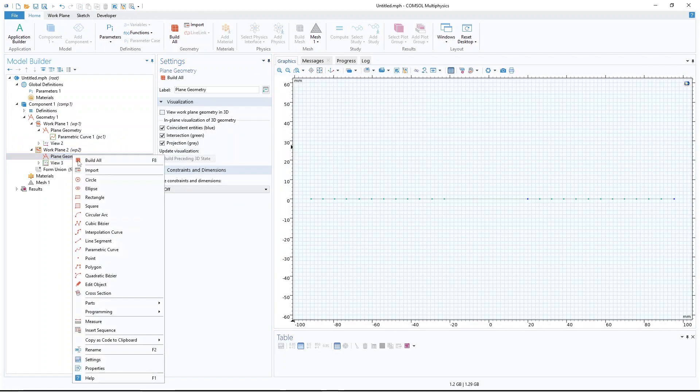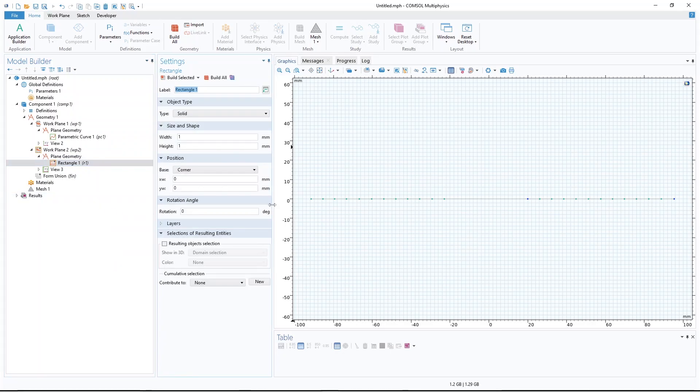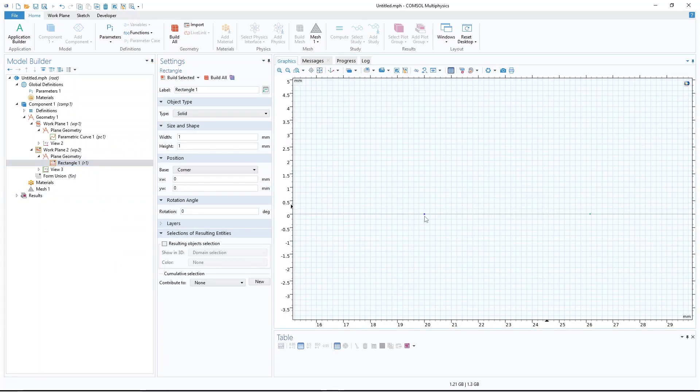So in this work plane, I want to create a rectangle. Okay, where do I want to create? I put it on the origin point that I selected. So this is starting at 20. So let's say the width of that rectangle is 1 and height is 4 millimeters.